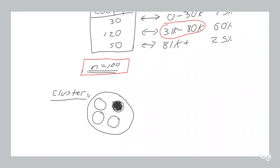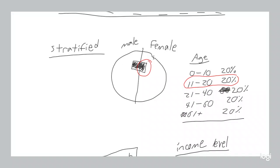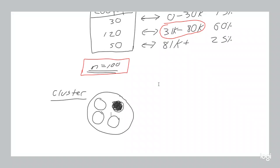The benefit is that resource-wise, you're not doing extra work — you don't need to ask other clusters because you expect the same response. Also, within that one cluster, whatever the distribution is among sub-groups like age, gender, or income level, they'll naturally be represented without you having to calculate how many people to ask from each category. The drawback is: what if your clusters don't actually behave the same? What if people from different cities or different classrooms give you different responses?